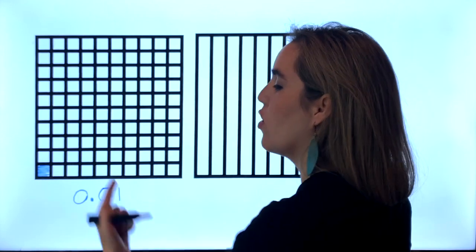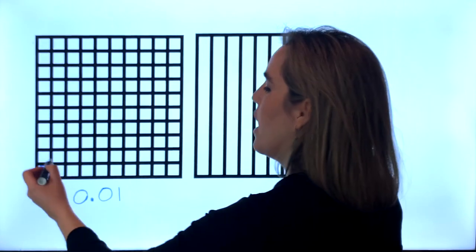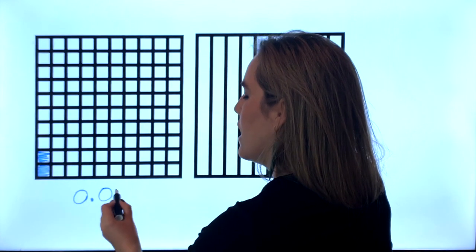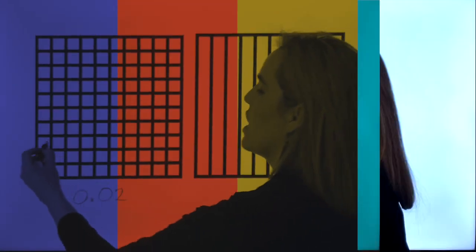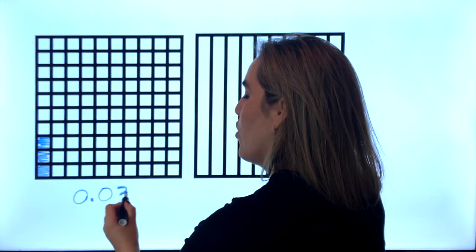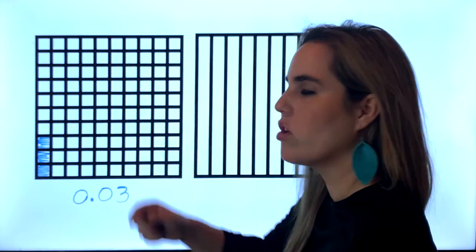Now if I color two, it's two hundredths. If I color three, you're right, three hundredths. And then four, five, six, and so on. But what happens when you color the first ten?